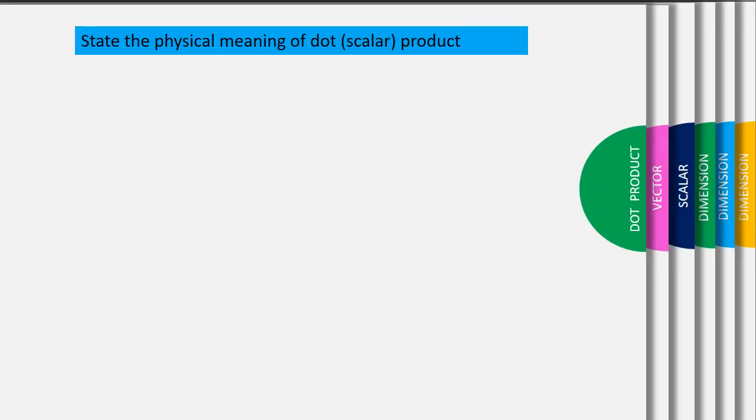State the physical meaning of dot product. Multiplication of two vectors is not just like normal multiplication operation. Like 3 multiplied with 5 equivalent to 15.